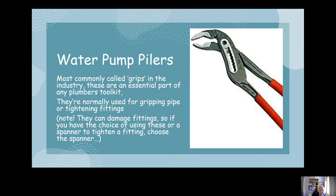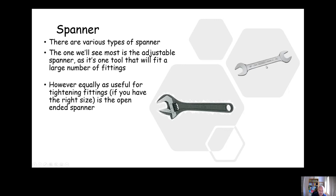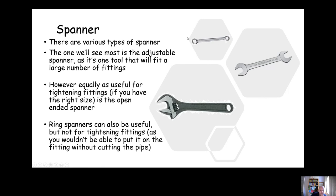Spanners - lots of different types of spanners. We often probably use the adjustable one because you can adjust it, it fits all sorts of different numbers of fittings. But I have a slight preference if I've got the choice of using a regular open-ended spanner like the one you can see up in the top right there, just because it doesn't move. With the adjustable sometimes it can slip a bit as you're tightening it which means you can slip off. Ring spanners can be useful but not really for tightening up fittings because you can't get them onto the pipe.